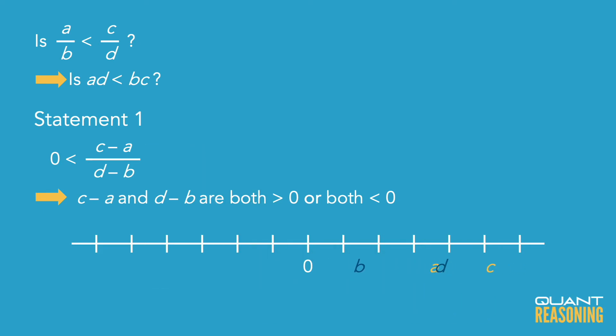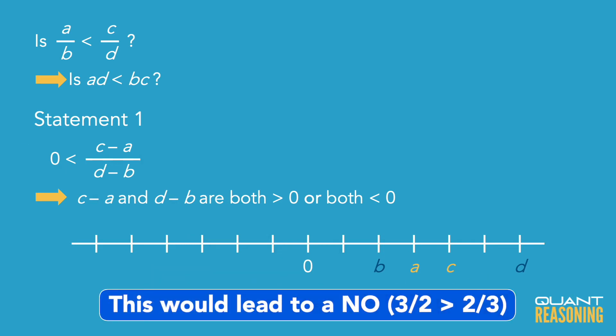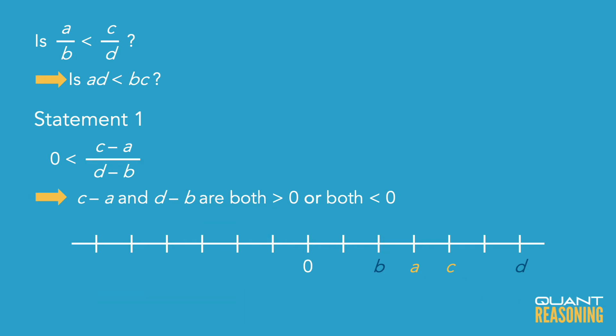So looking at the possibilities with statement one, and maybe drawing some number lines, I really don't see how we could possibly tell which of those ratios is greater. There's just way too many possibilities here. And so I'm going to go ahead and pick B and move on to the next question.